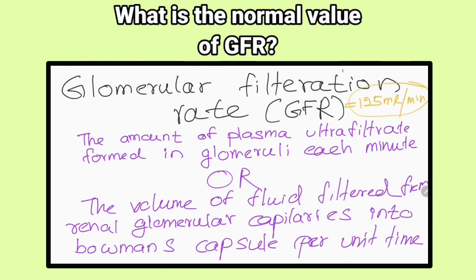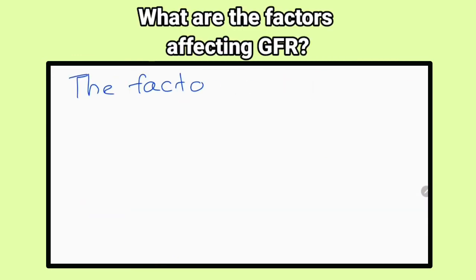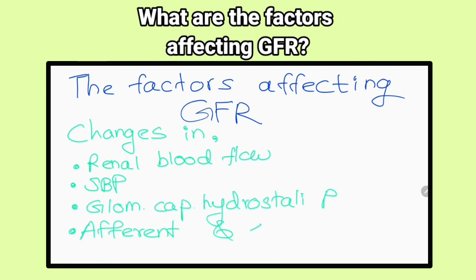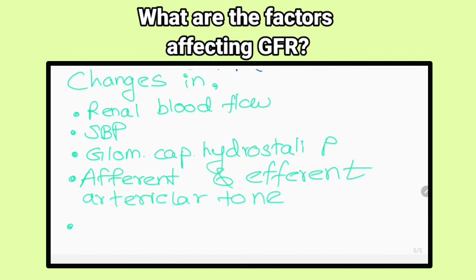What are the factors affecting glomerular filtration rate? Changes in renal blood flow, systemic blood pressure, glomerular capillary hydrostatic pressure, afferent and efferent arteriolar tone, glomerular capillary membrane permeability, effective filtration surface area, and concentration of plasma proteins.